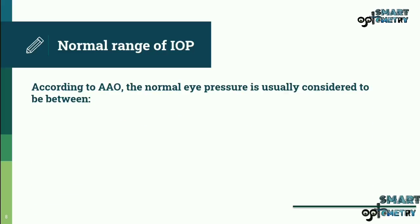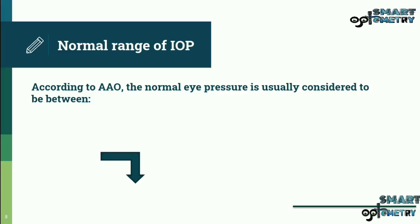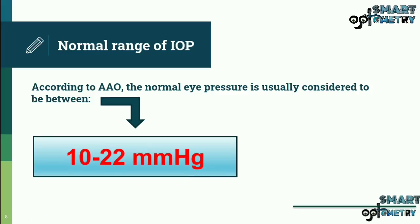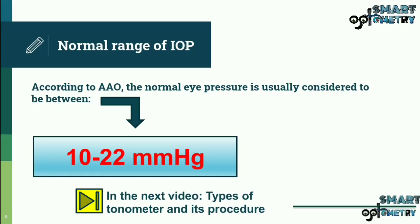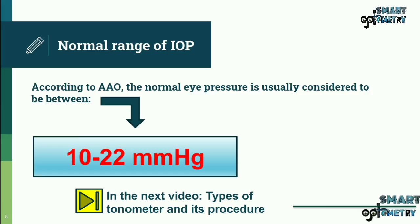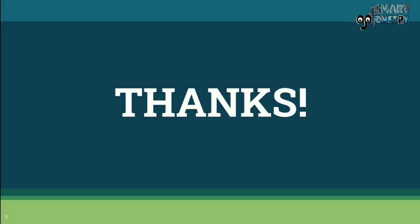Normal range of intraocular pressure: as mentioned at the beginning of this video, according to the American Academy of Ophthalmology, the normal eye pressure is usually considered to be between 10 to 22 mmHg. In the next video we'll be discussing the types of tonometer and their procedures, so stay tuned for more videos.